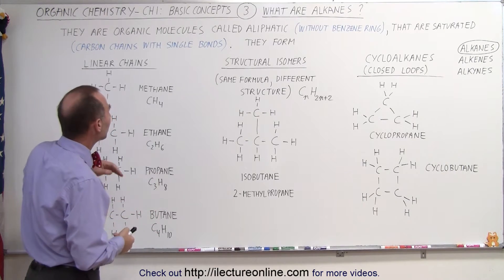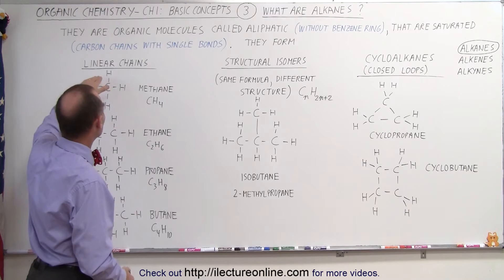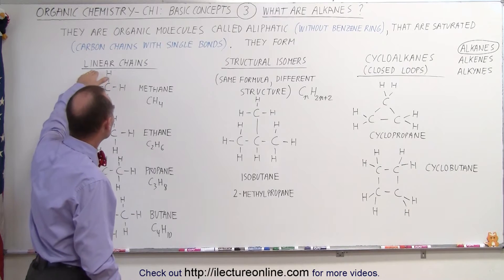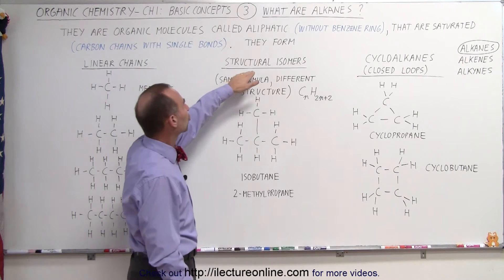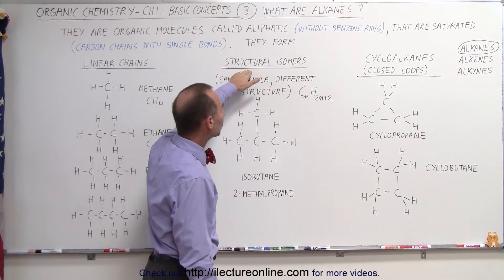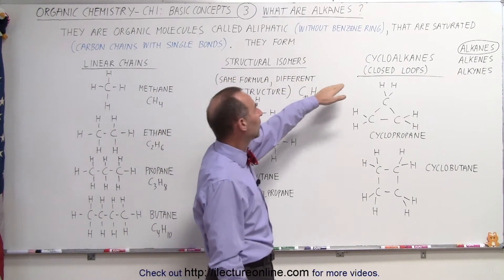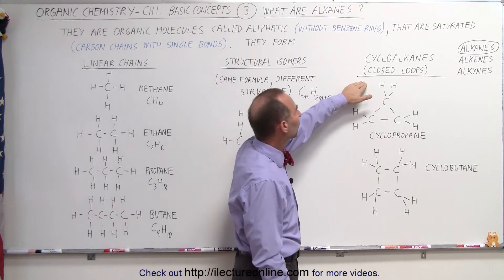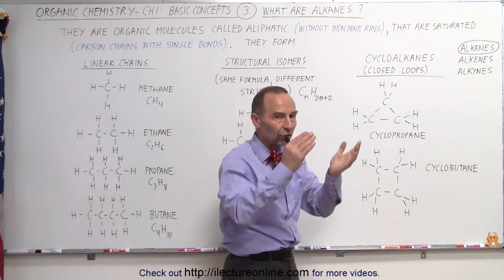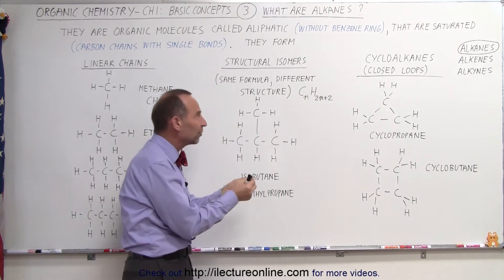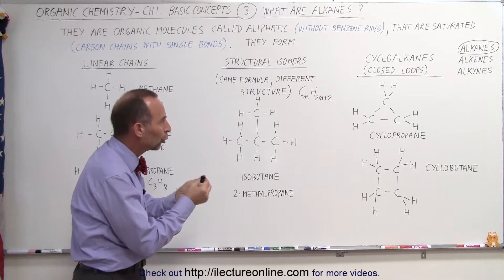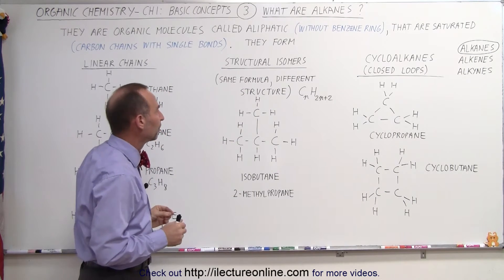Alkanes form different structures. They form linear chains, they form structural isomers, and they form cycloalkanes, which are chains that close in on themselves and form closed loops.